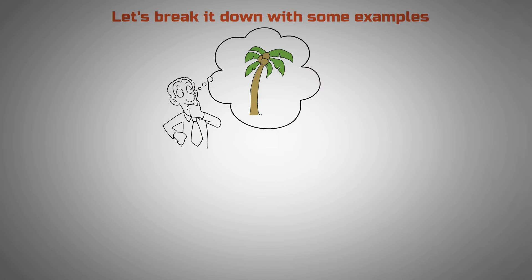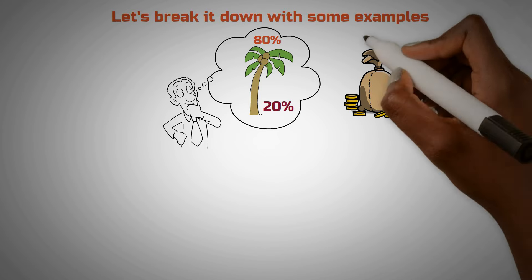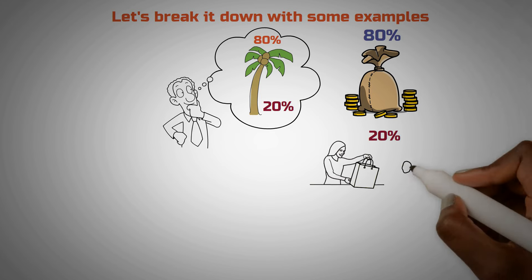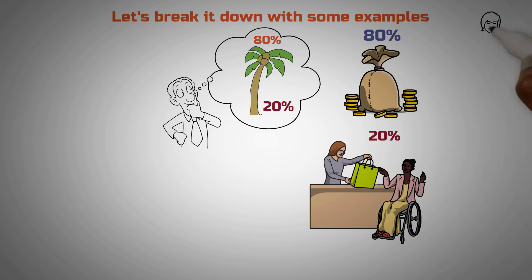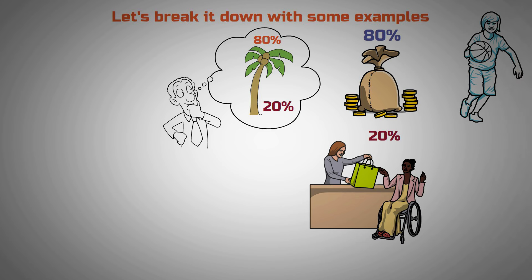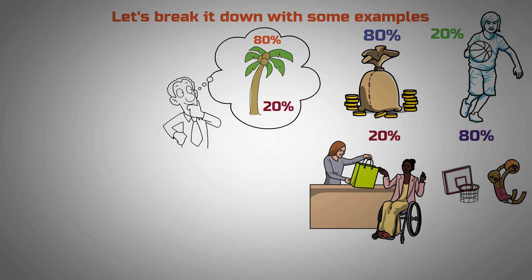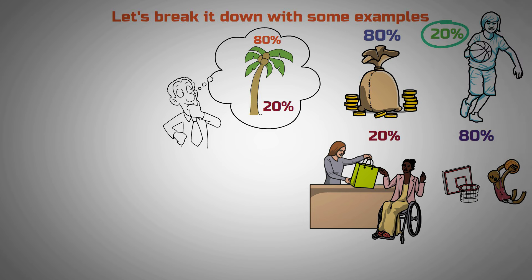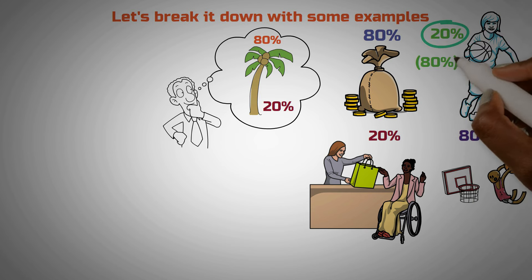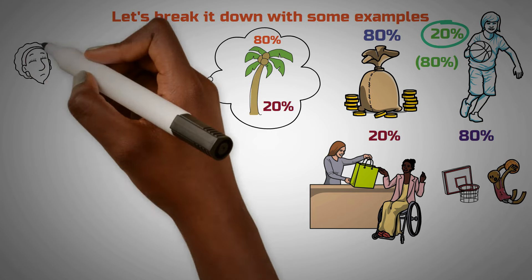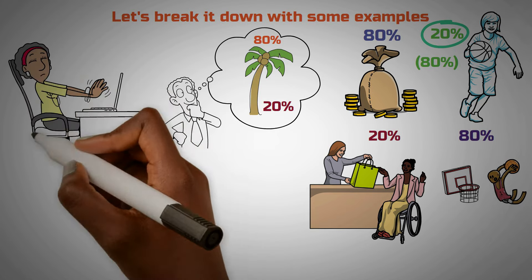Let's break it down with some examples. Think about a plant — usually only about 20% of it is responsible for around 80% of the fruit it produces. In a business, 80% of the profits often come from just 20% of the customers. In sports like basketball, about 20% of the players score 80% of the points. But it's not just about finding the 20% that matters — it's also about understanding the 80% that might not be as crucial, so you can avoid spending too much time on things that don't really make a big difference.